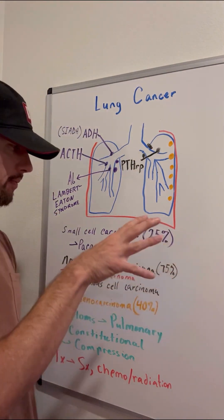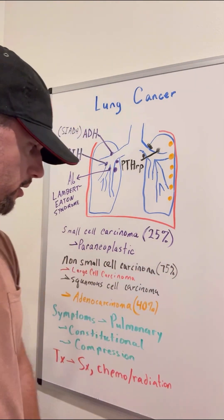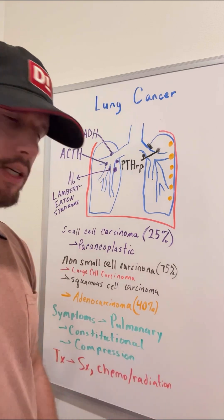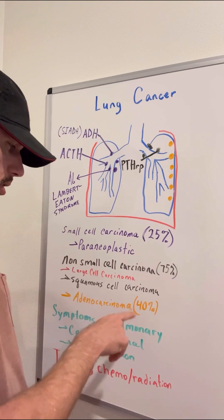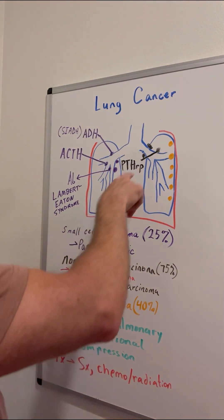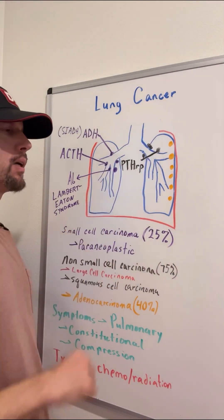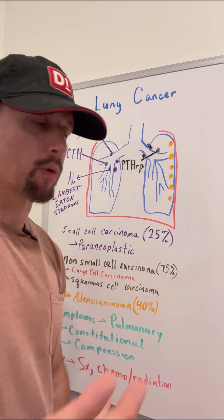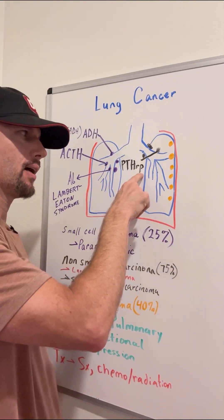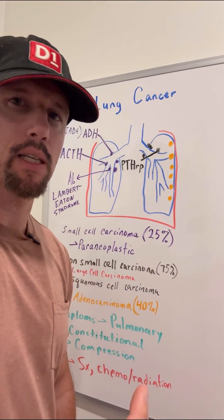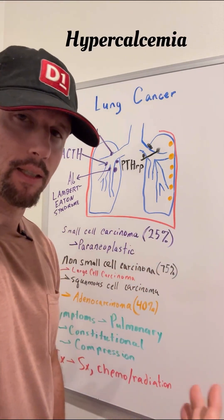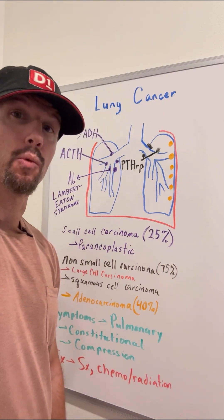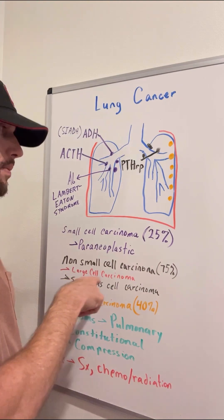The other three-fourths of lung cancers are classified as non-small cell carcinomas. These include large cell carcinoma, squamous cell carcinoma, and adenocarcinoma. Squamous cell carcinoma tends to occur at the hilum of the lung, where everything comes in. It has a paraneoplastic syndrome where it releases parathyroid hormone-related peptide, which acts just like parathyroid hormone, increasing calcium levels and causing hypercalcemia. So when you see hypercalcemia on blood work without high PTH, you might consider paraneoplastic syndrome from squamous cell carcinoma of the lung.